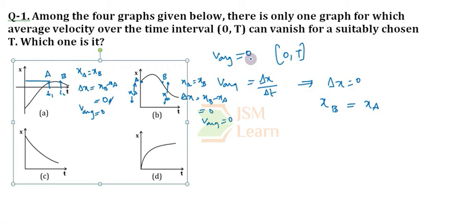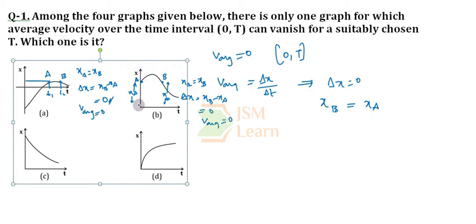We need V average equal to 0 in the 0 to T time interval, so we need to check the time interval. Is this event happening in 0 to T or not? Since point A lies on the displacement axis, the time is considered as 0. So this is happening in the 0 to T time interval. In this 0 to T interval, our average velocity is 0. So Option B is the correct answer.